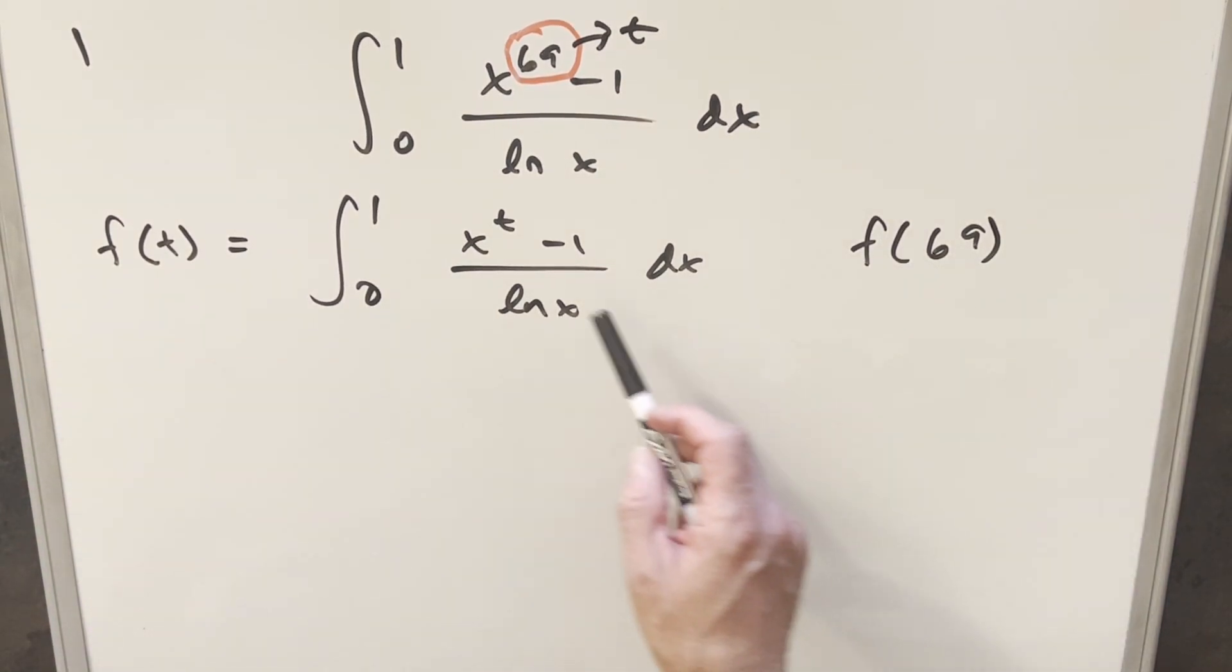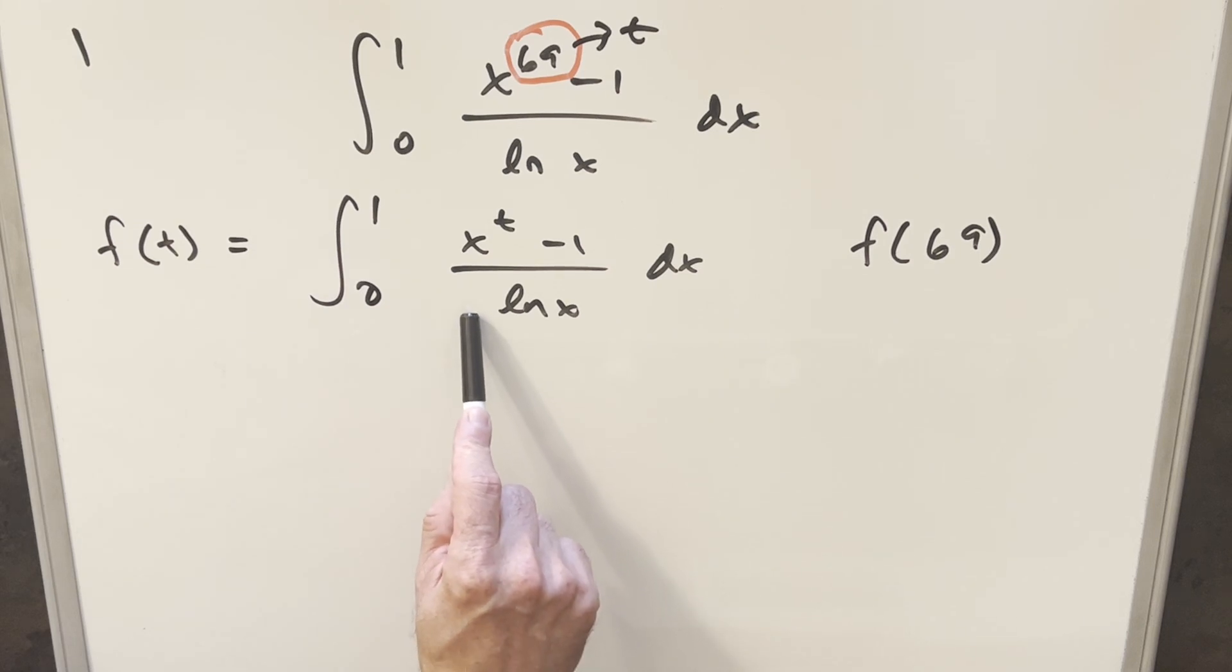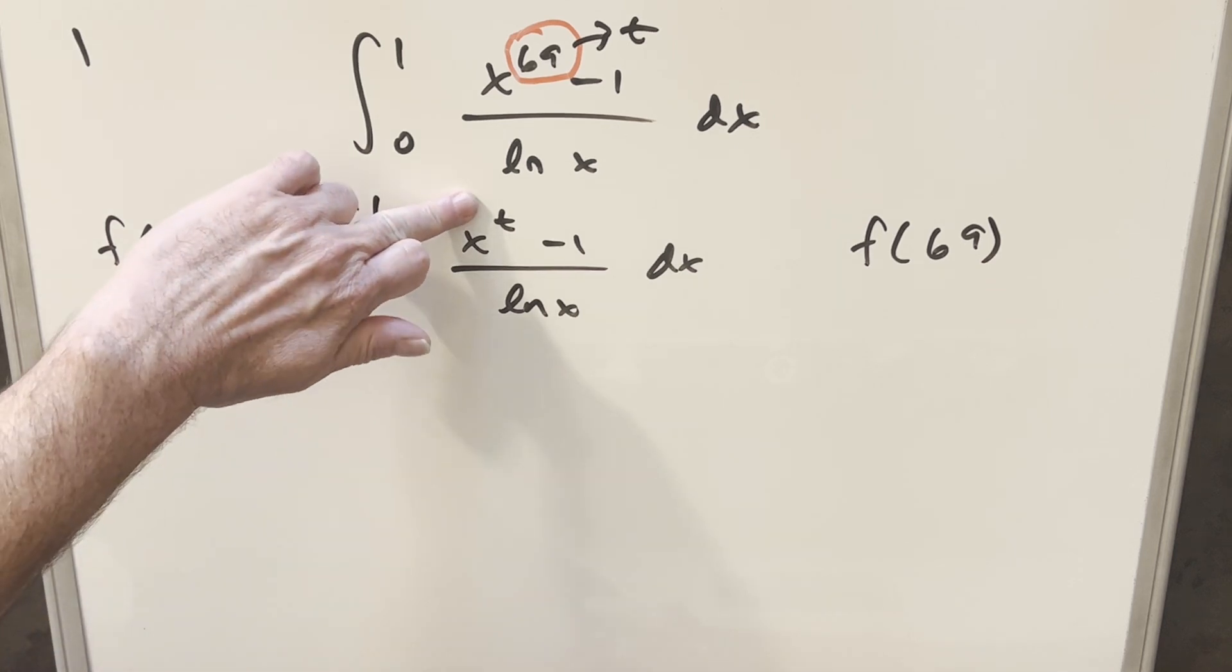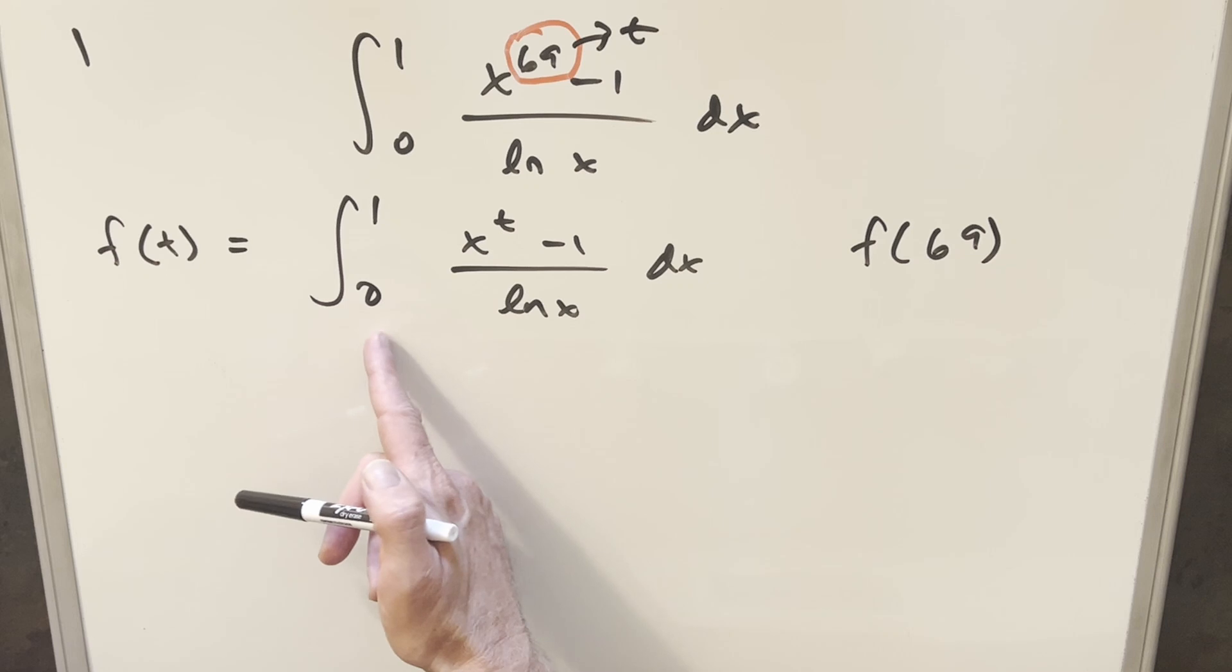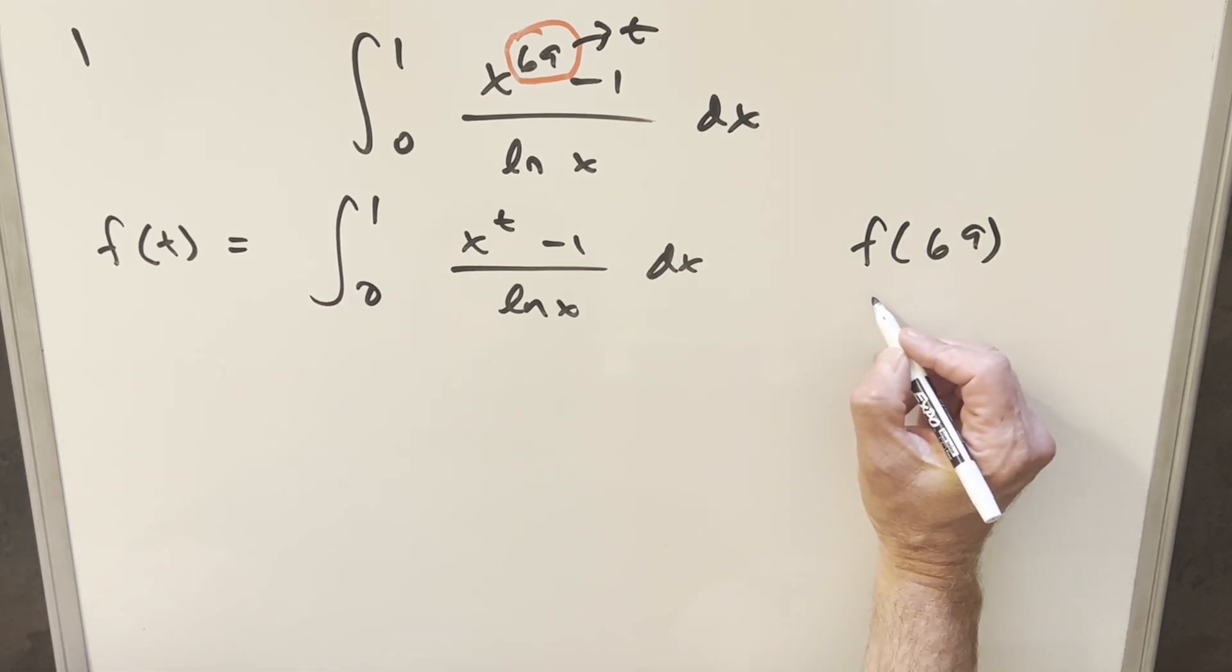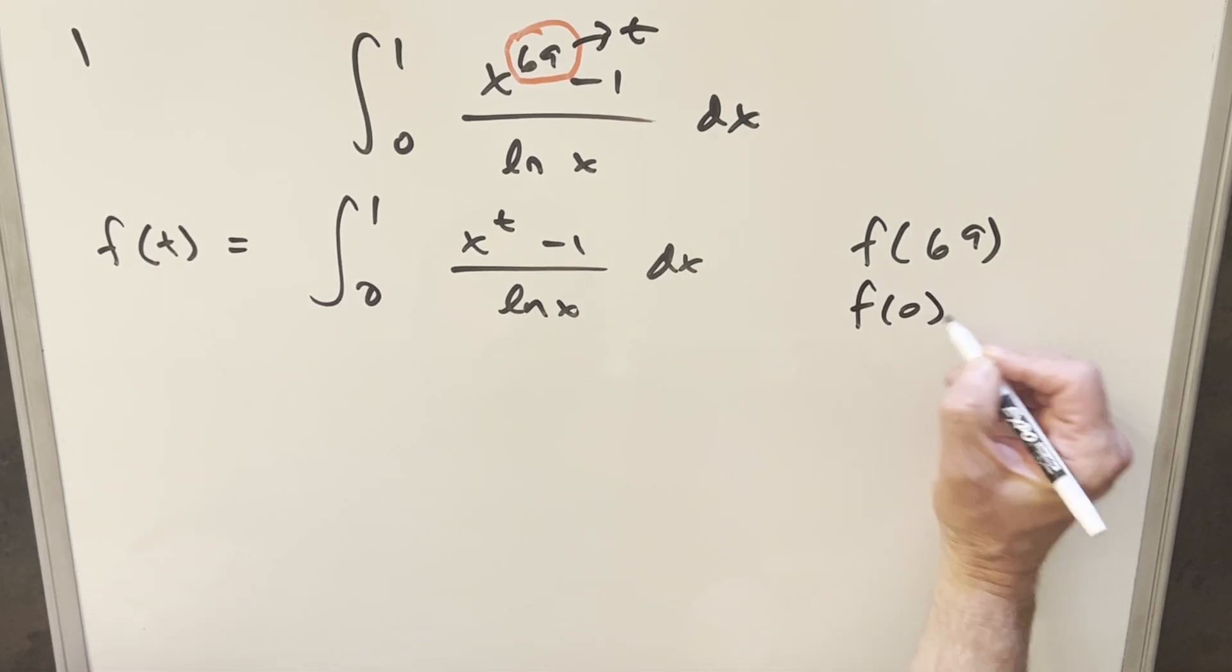But now one other value that we're going to want for this is we're going to want some other t value where we can evaluate and know the whole value of the integral. And what's going to work for that is just notice if t is zero, x to the zero is one, the numerator becomes zero, the integral becomes zero. So we'll have this for later that we can say that f of zero is going to just be equal to zero.